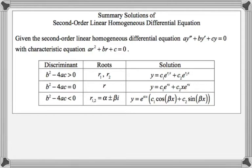If the discriminant equals zero, you only get one real root, but it's a double root. You can't write c₁e^(rx) + c₂e^(rx) because that's writing the same thing twice. So we introduce an extra x factor — I call it the 'multiply in an x rule.' The solution looks like y = c₁e^(rx) + c₂xe^(rx).